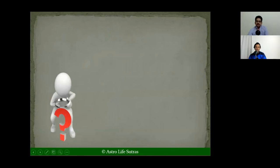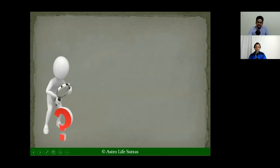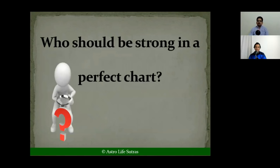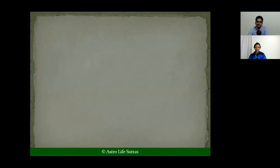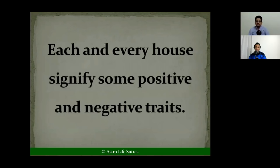A question came in from a viewer on the Hindi channel: who should be stronger in a perfect chart — the ascendant lord or the eighth lord? The correct answer is: each and every house signifies both positive and negative traits. We cannot say the eighth house is always negative. Even a strong Lagna lord represents some negativity — in Nadi, it is 12th from the second house, so it can be considered negative for marriage, making the native feel they don't need anybody.